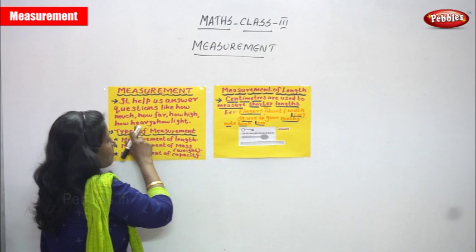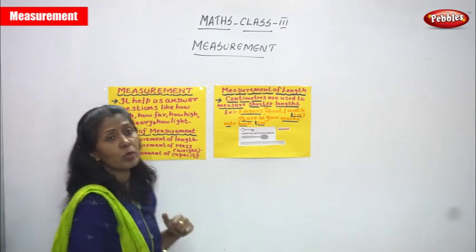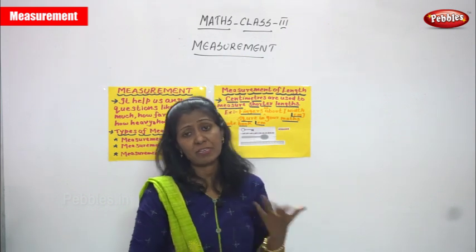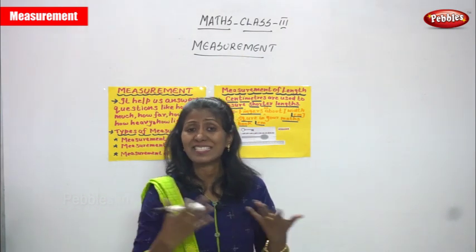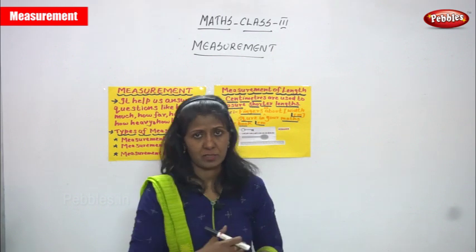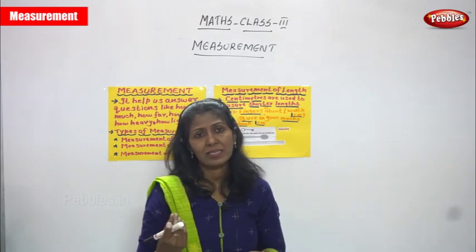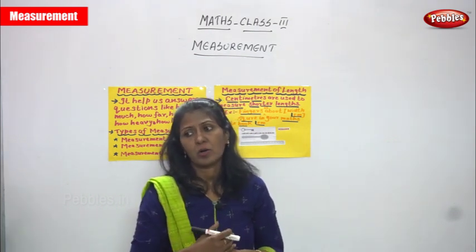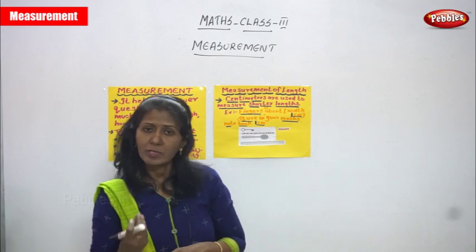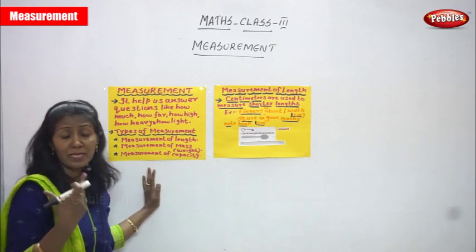'How heavy' comes under mass. For example, if you want to check your weight — 54 kg, 55 kg, 62, 75 kg — 80 kg means how heavy the man or object is. More than 100 kilos we can call heavy. And 'how light' — for example, a very light cloth, a light dress, or a pillow — that is how light it is, and it also comes under measurement of mass.